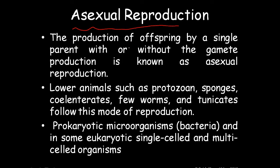Asexual reproduction: the production of offspring by a single parent, with or without gamete production, is known as asexual reproduction. There may be gamete production or there might not be. Lower animals such as protozoans, sponge, coelenterates, few worms, and tunicates follow this mode of reproduction. It is commonly found in prokaryotic organisms and some eukaryotic organisms.